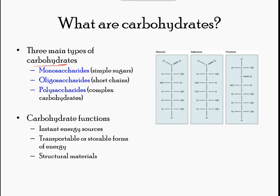Carbohydrates can be represented by the formula (CH2O)n, where N is the number of carbon atoms in the molecule. In other words, the ratio of carbon to hydrogen to oxygen is 1:2:1 in carbohydrate molecules. Carbohydrates are classified into three subtypes: monosaccharides, disaccharides, and polysaccharides.